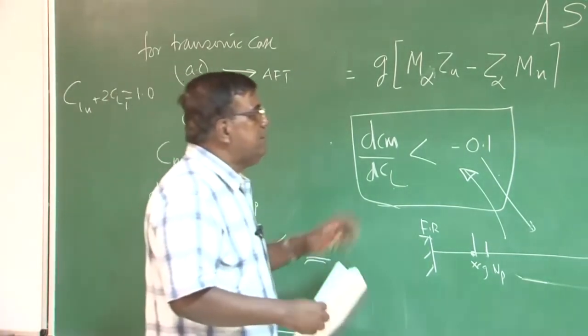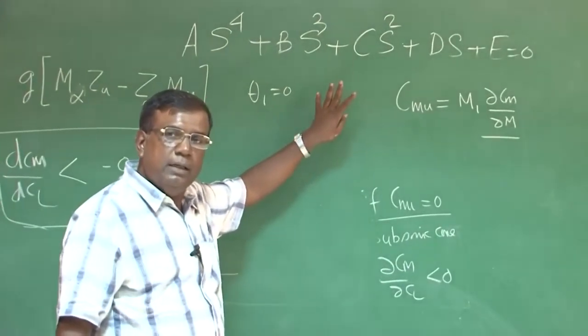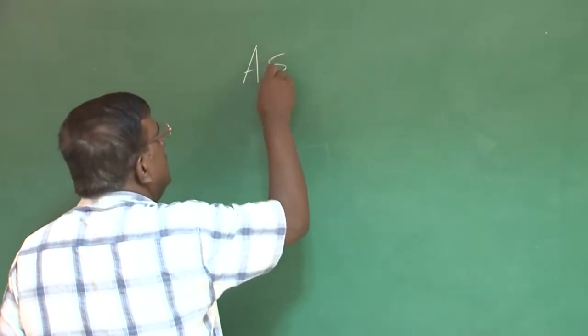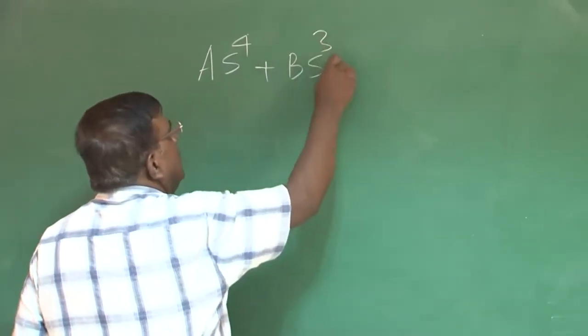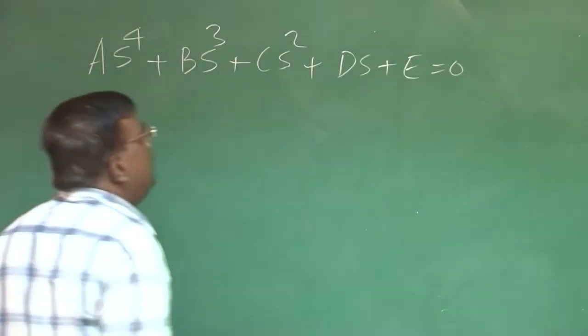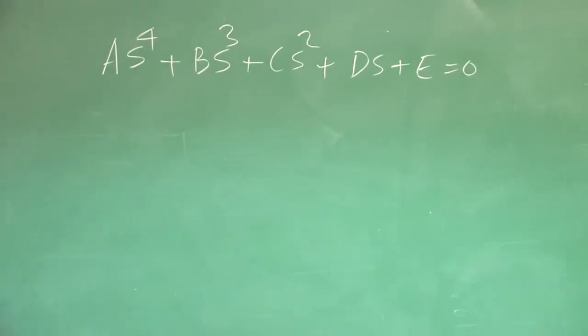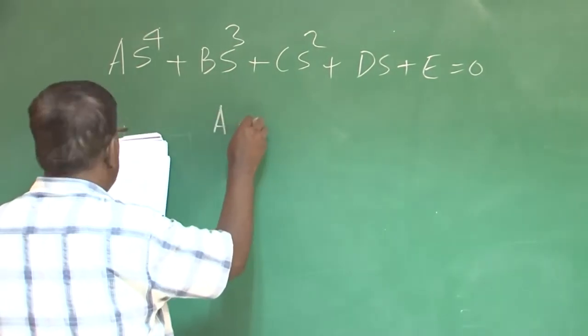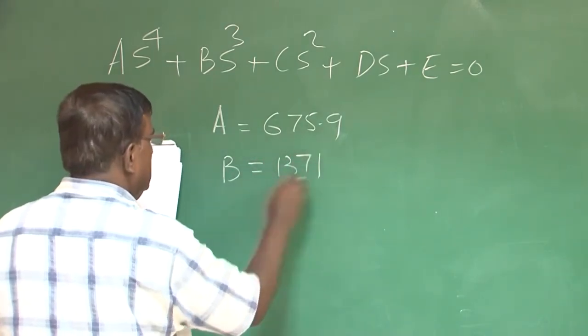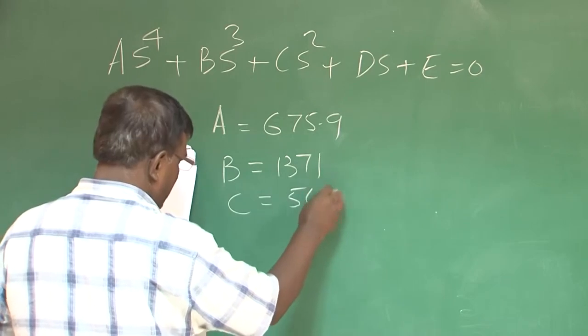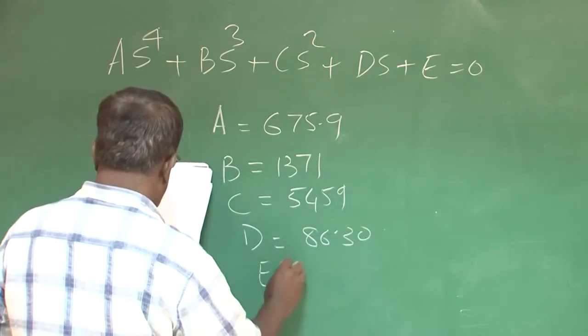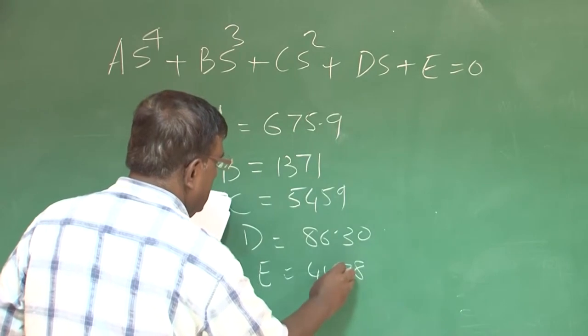That is true. So let us try to handle this characteristic equation. Let us say for an aircraft, the ABC values are like this: A equals 675.9, B equals 1371, C equals 5459, D equals 86.30 and E equals 44.78.